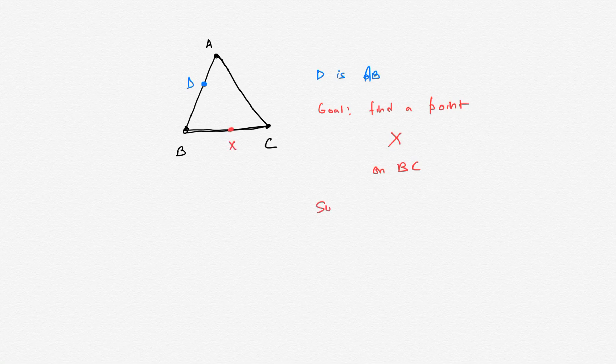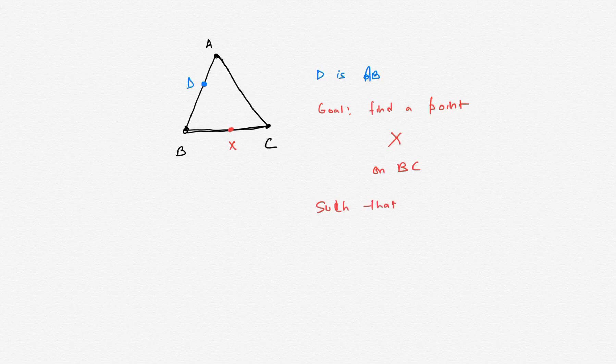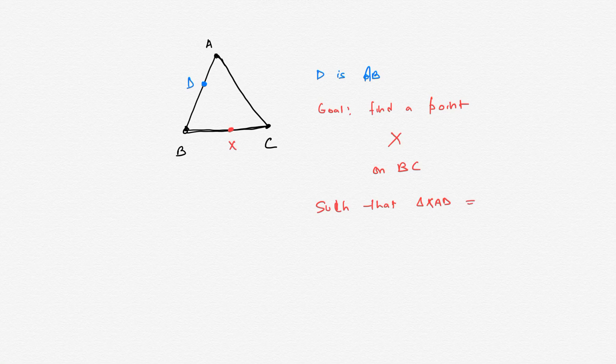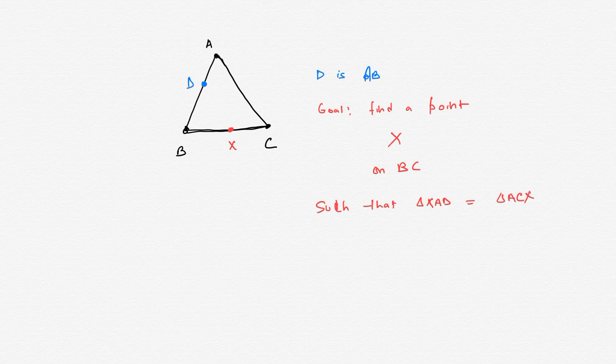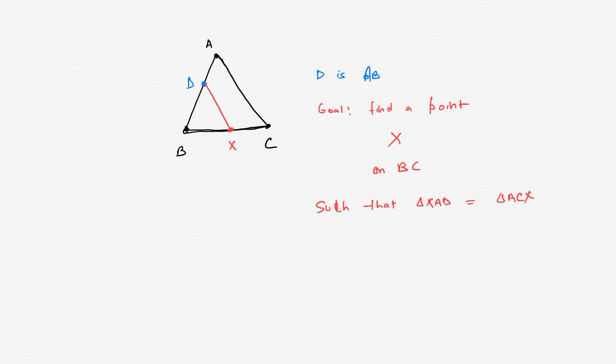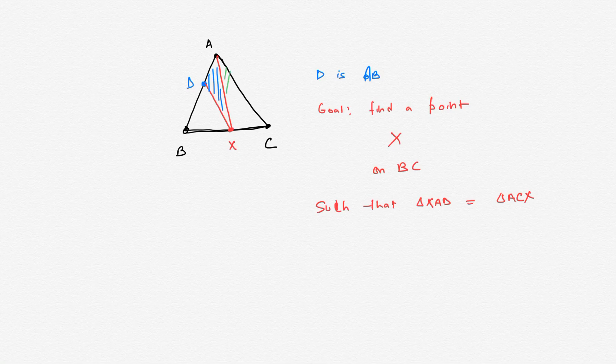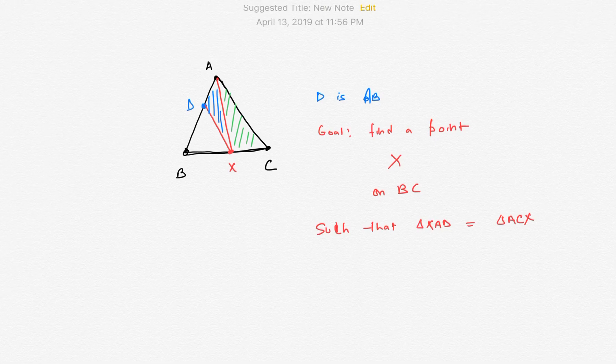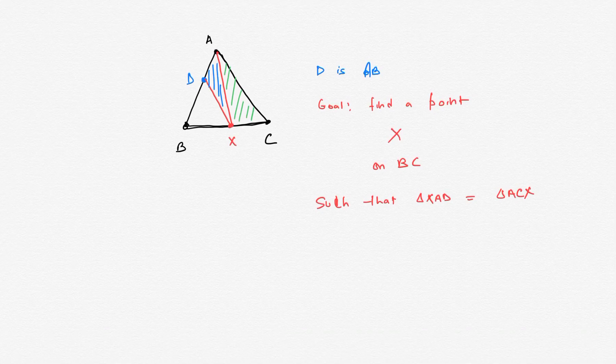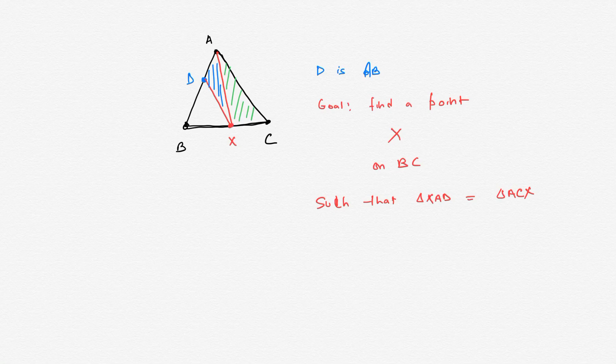Such that the area of triangle XAD equals the area of triangle ACX. We want the area of triangle ADX, this blue shaded triangle, to equal the area of the green triangle. This is an investigation for point X.